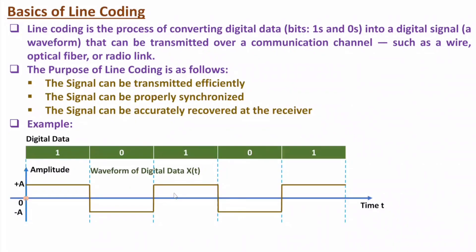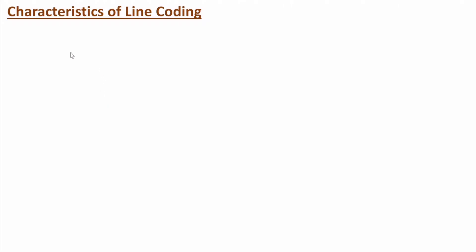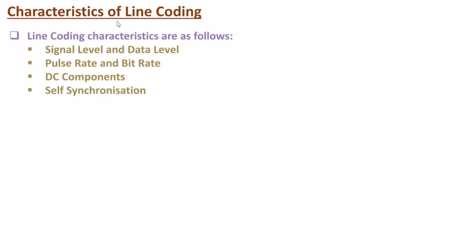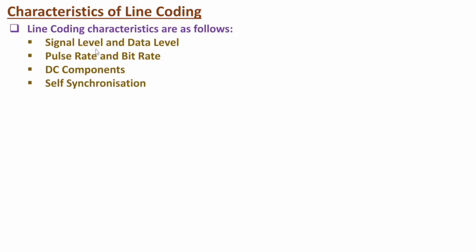Now let me discuss the characteristics of line coding. In this video I will discuss four major characteristics: first, signal level and data level; second, pulse rate and bit rate; third, DC components; and fourth, self-synchronization.